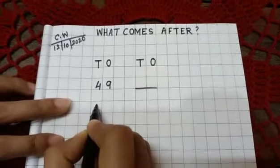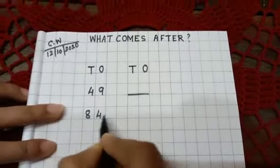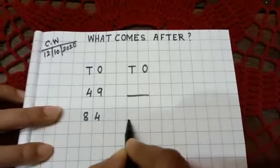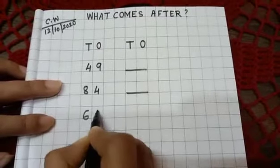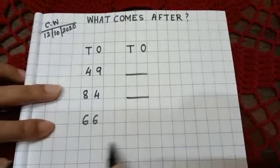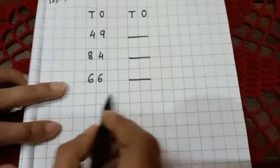Then eight, four, eighty-four, dash. Then six, six, sixty-six, dash, sixty-six. Next number.